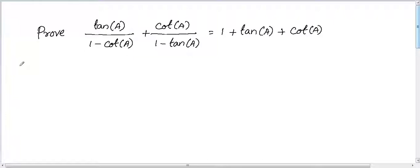Here we need to prove left hand side is equal to right hand side. Let's take left hand side and prove that it is equal to right hand side. In the left hand side we have tan a divided by 1 minus cot a, plus cot a divided by 1 minus tan a.